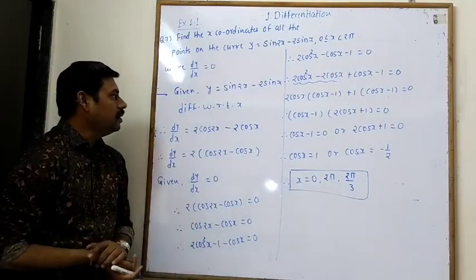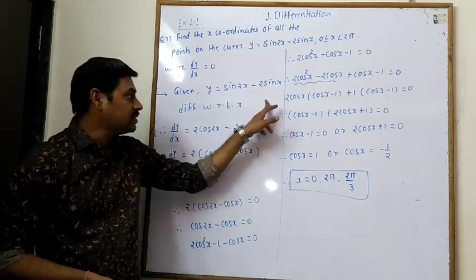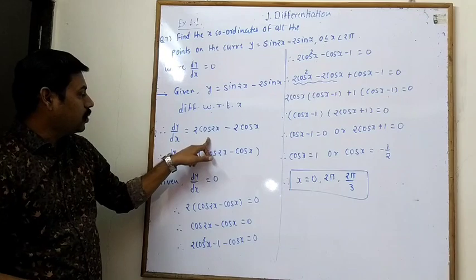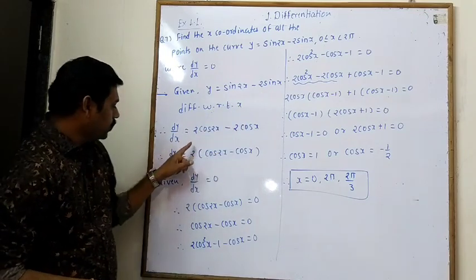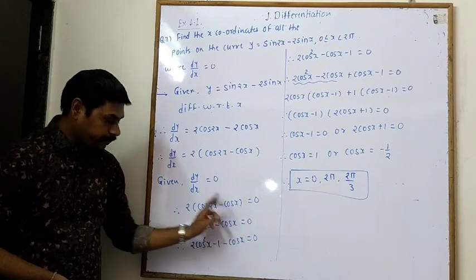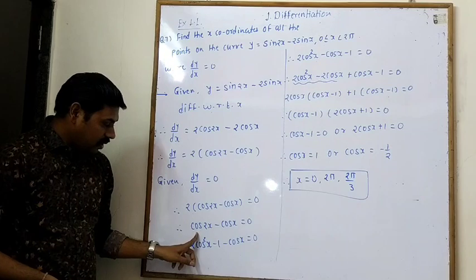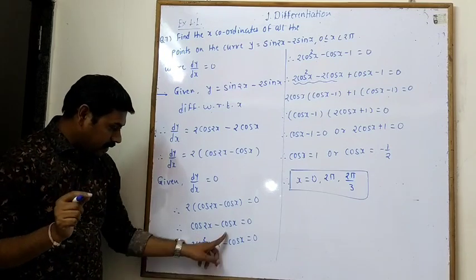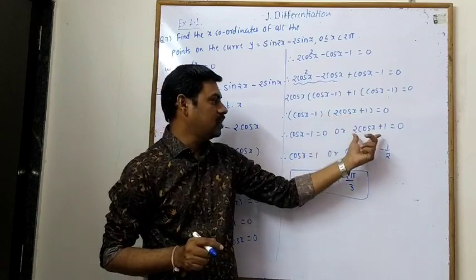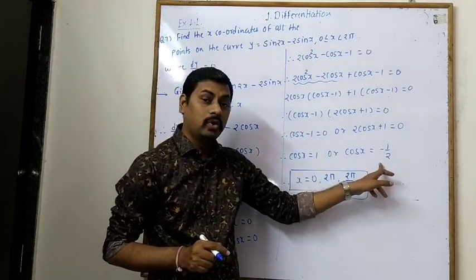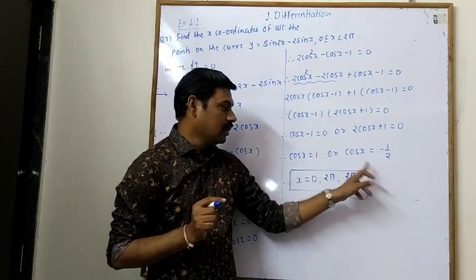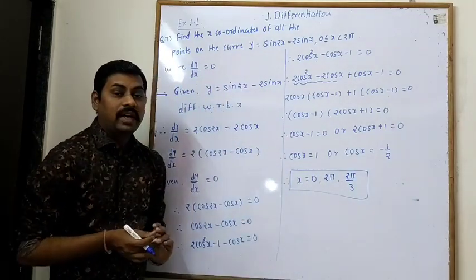This is a very important question. Summary: y = sin(2x) − 2sin(x), differentiated gives dy/dx = 2cos(2x) − 2cos(x). Setting dy/dx = 0 and applying the cos(2x) = 2cos²x − 1 identity leads to the quadratic 2cos²x − cos(x) − 1 = 0, giving cos x = 1 or cos x = −1/2, so x = 0, 2π, or 2π/3.